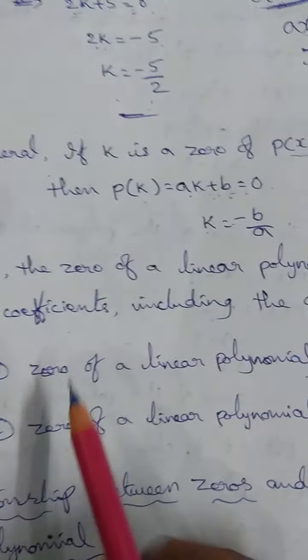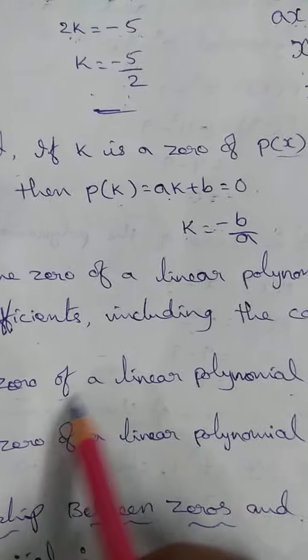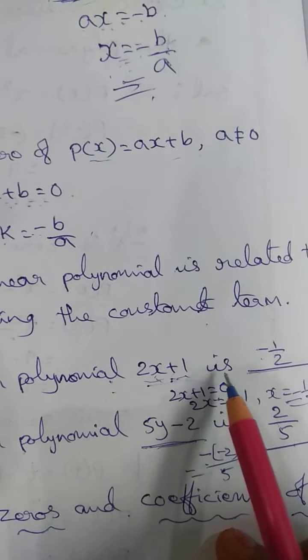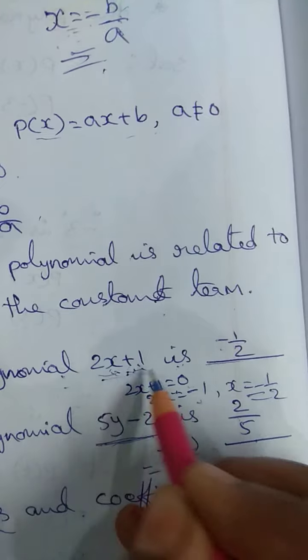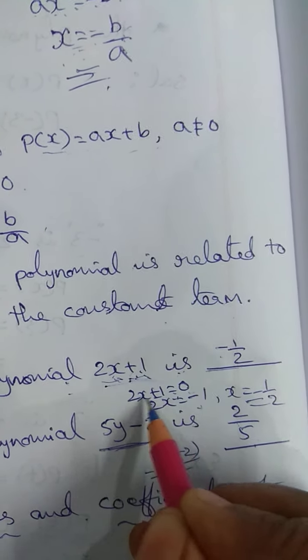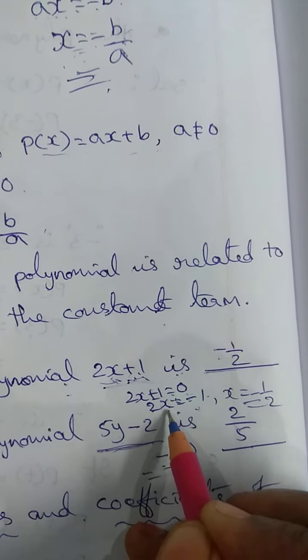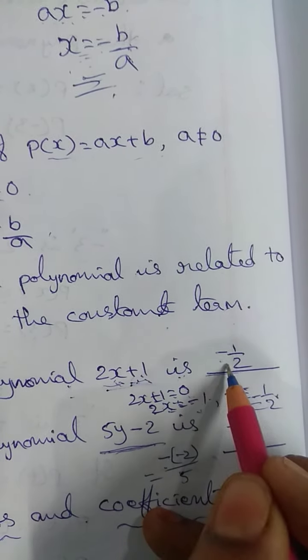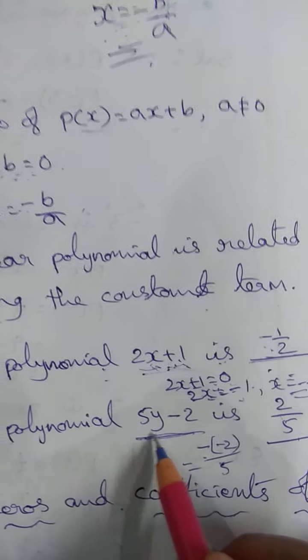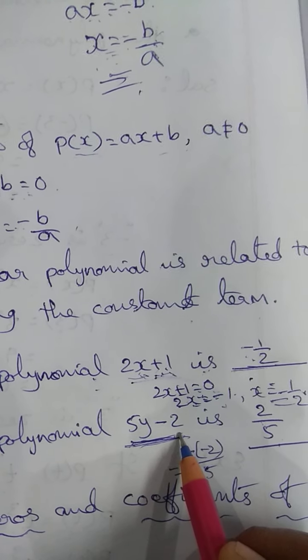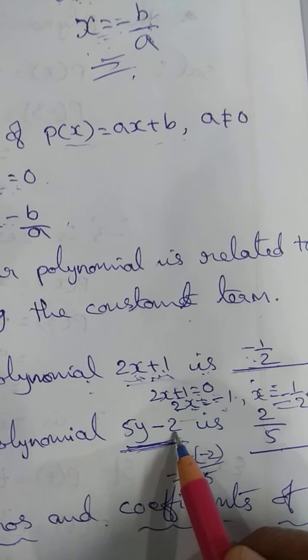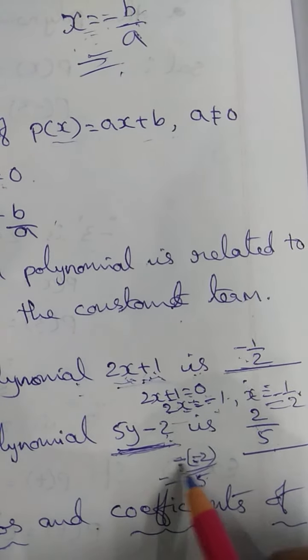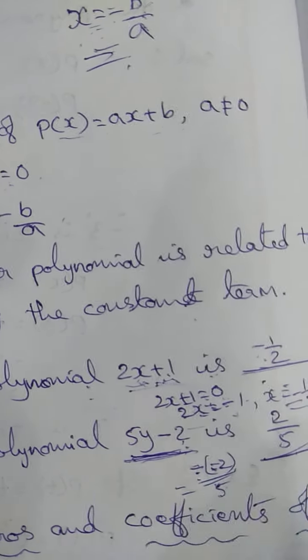Let's observe this properly. The zero of the linear polynomial 2x + 1: using the formula x = -b/a, we get x = -1/2. And for 5y - 2, the zero of the polynomial is -b/a. Here -b value is -(-2) = 2, and a is 5, so the zero is 2/5.